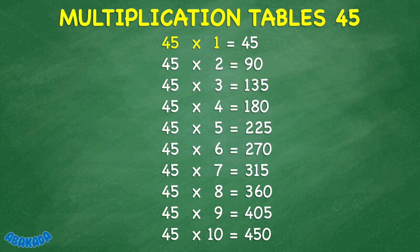45 times 1 equals 45. 45 times 2 equals 90. 45 times 3 equals 135. 45 times 4 equals 180. 45 times 5 equals 225.